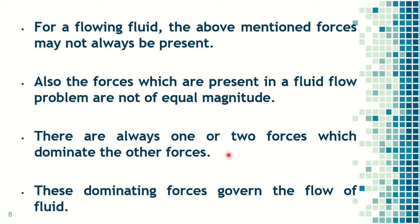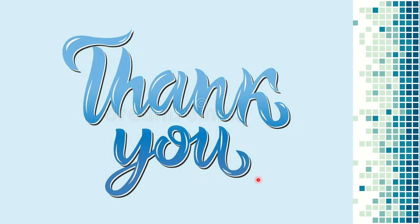Most of the time, the forces will not be equal — there are always one or two forces which dominate the others. For example, if a fluid flows from section A to section B with gravity and pressure forces acting, the inertia force also exists by default, but gravity and pressure dominate. The viscous force may be present but dominated by these two. The dominant forces govern the flow of the fluid.